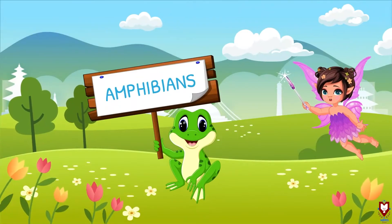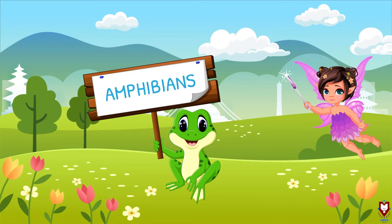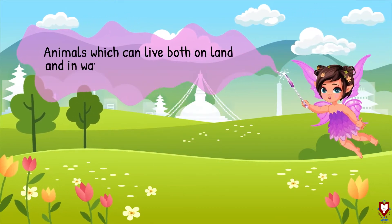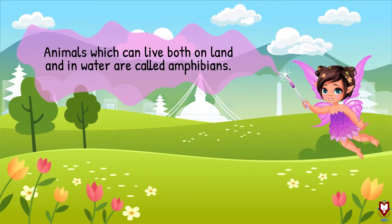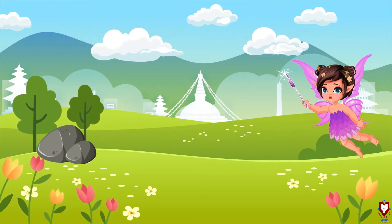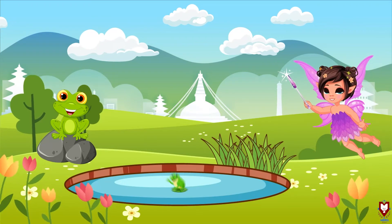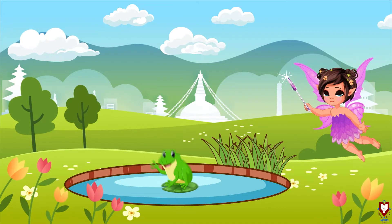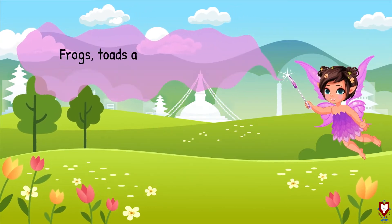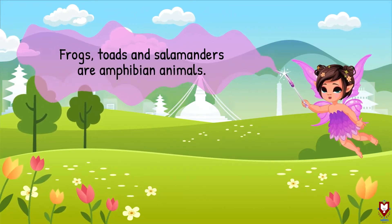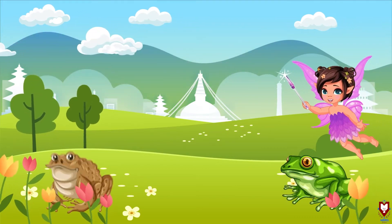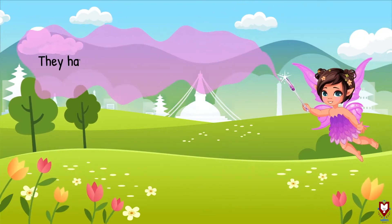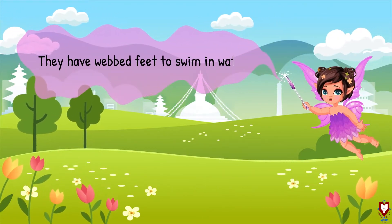The next type of animal is amphibians. Animals which can live both on land and in water are called amphibians. Frogs, toads, and salamanders are amphibian animals. They have webbed feet to swim in water.